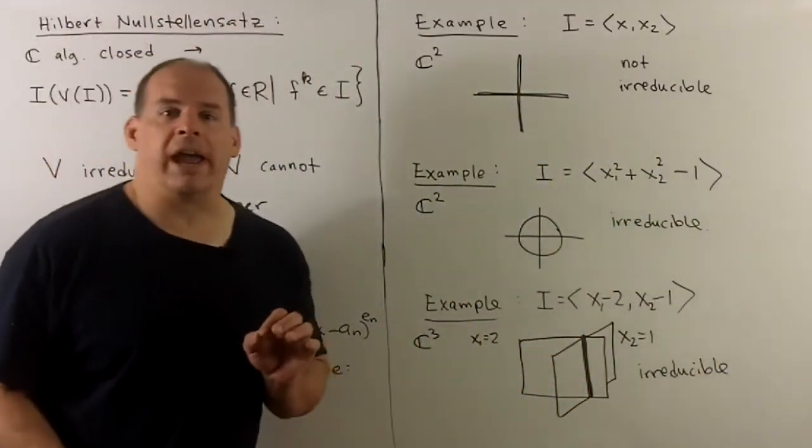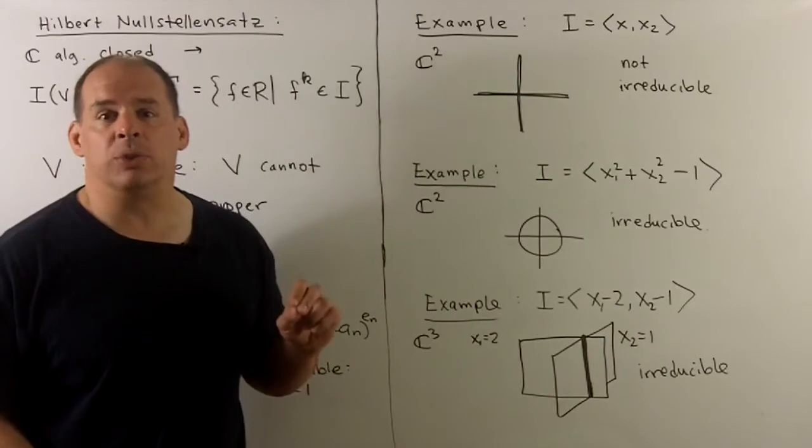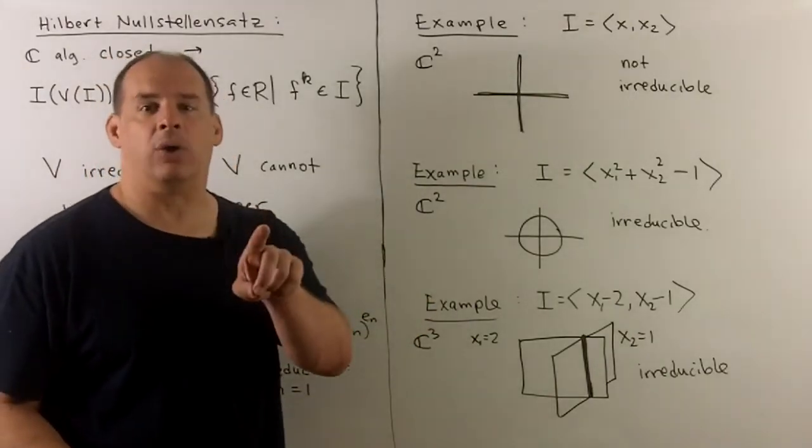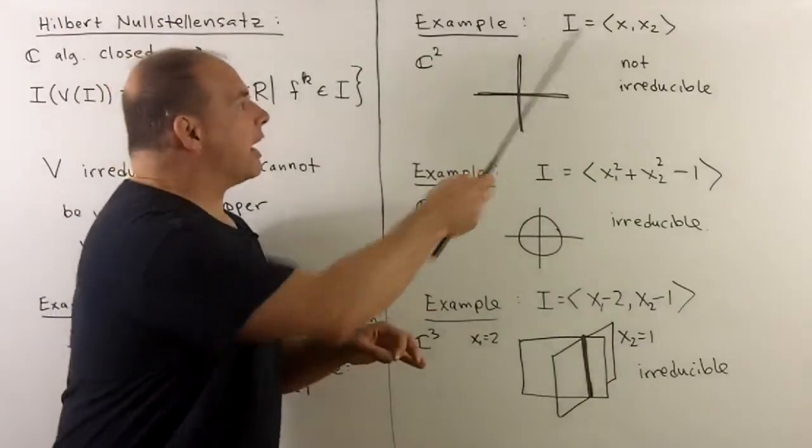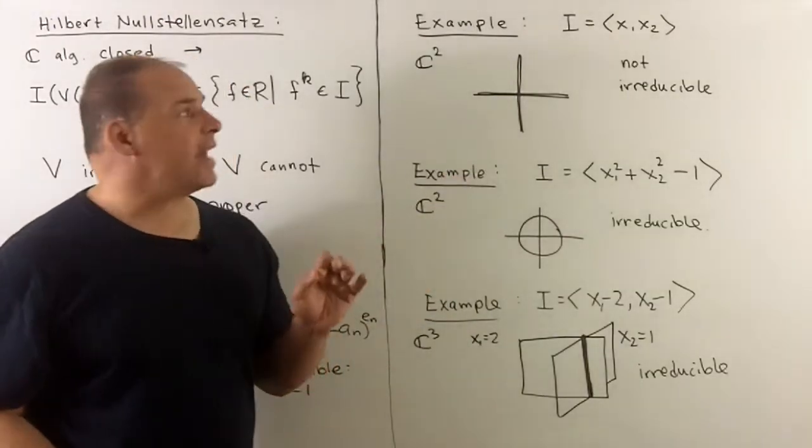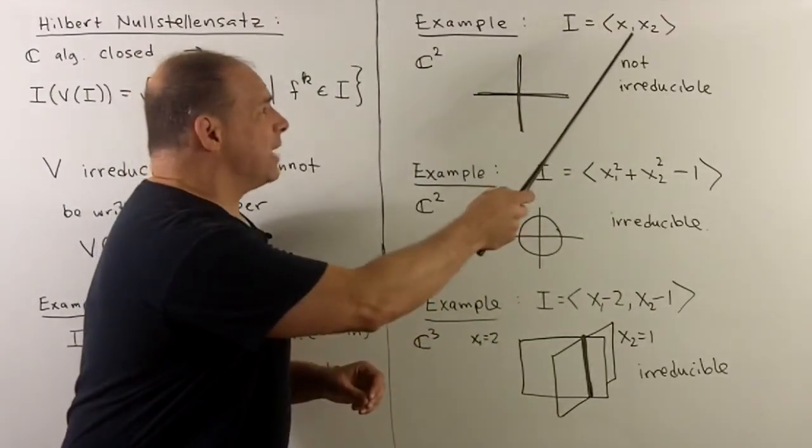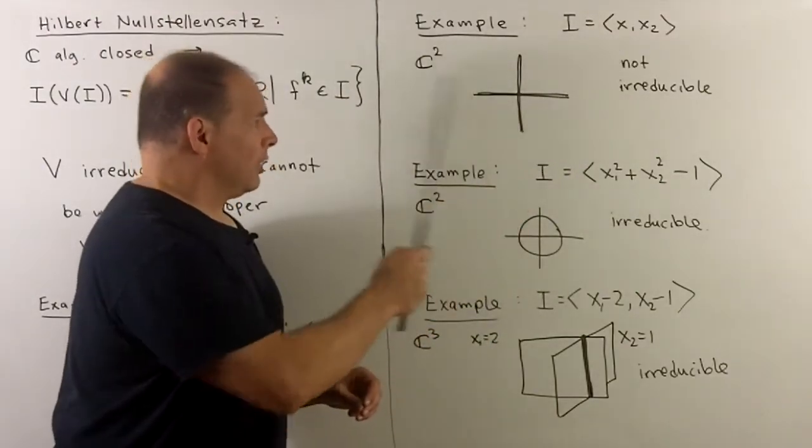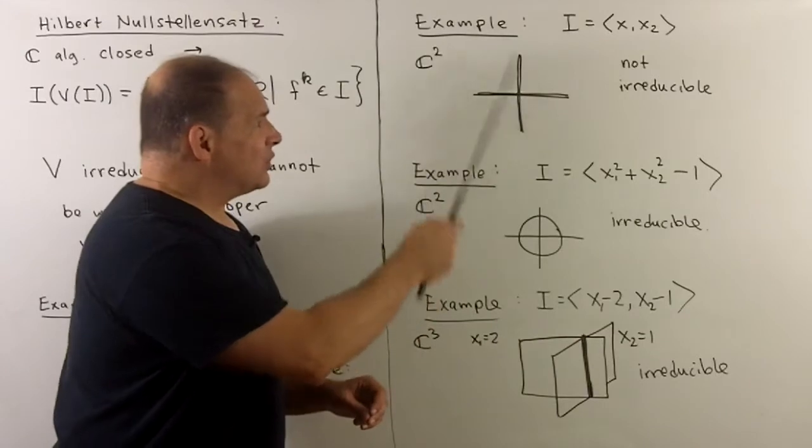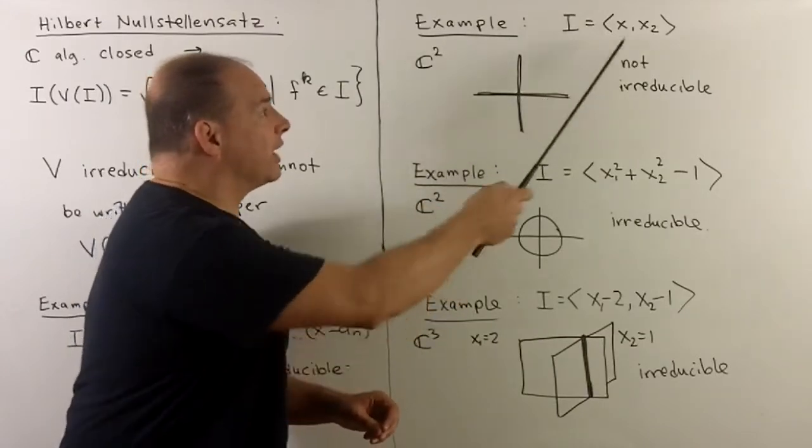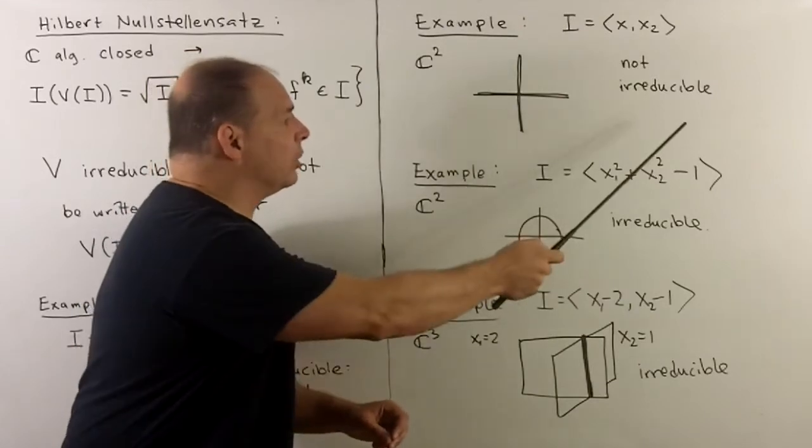The simplest way to generate varieties that are not irreducible, I could take any two non-constant polynomials, take their product, and then take the ideal generated by that. So for example, in C2, I take X1 times X2, we're going to get coordinate axes. This has two pieces that are varieties, X1 equals zero, X2 equals zero, so this is not irreducible.